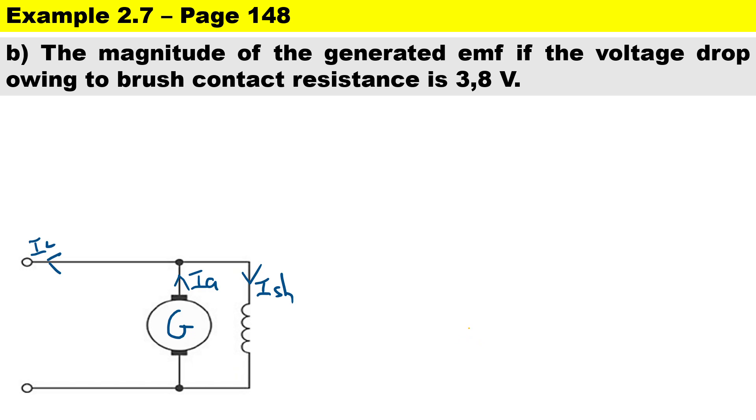Next question: calculate the magnitude of the generated emf if the voltage owing to the brush contact resistance is 3.8 volts. So let's write down the formula over here. For a shunt circuit it is V plus Ia times Ra, and then we need to include the brush contact resistance and that's the armature current multiplied by the resistance of the brush.